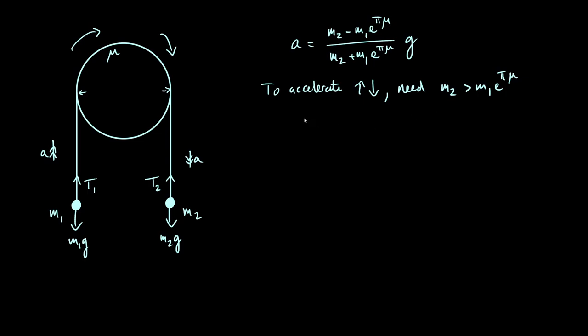And by symmetry, to accelerate the other way so that mass 1 goes down and mass 2 goes up, you need m1 to be bigger than m2 e to the pi mu.